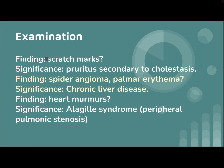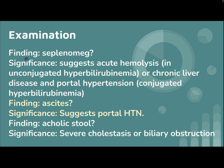Examination findings: scratch marks are significant for pruritus secondary to cholestasis. Spider angioma and palmar erythema are significant for chronic liver disease. A heart murmur is significant for Alagille syndrome and peripheral pulmonic stenosis.